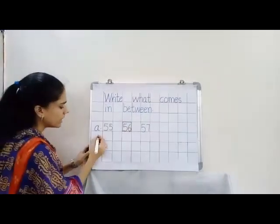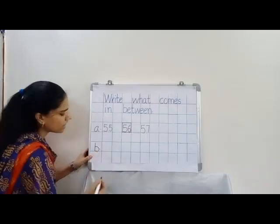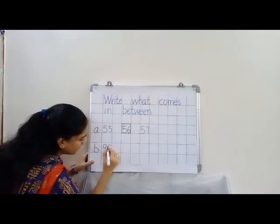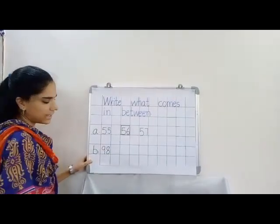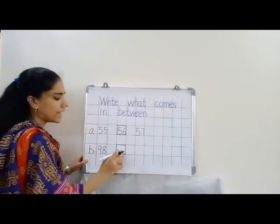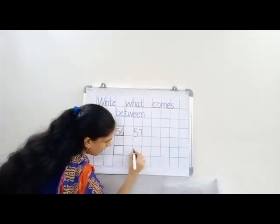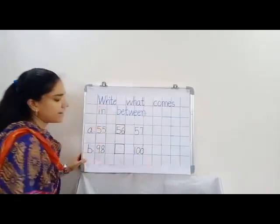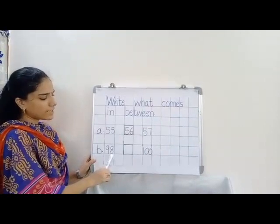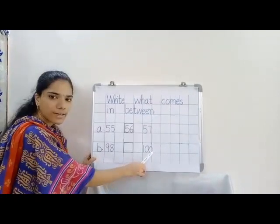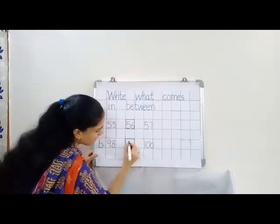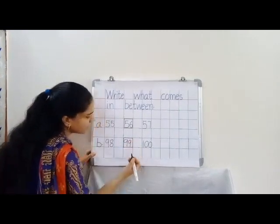Now leave one line and write small b dot. Now here you write 98, leave one box and draw one box. Again leave one box and write 100. Now tell me children which number comes in between 98 and 100. Yes, it is 99.